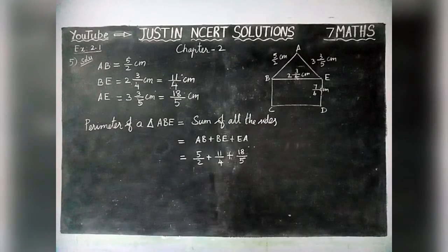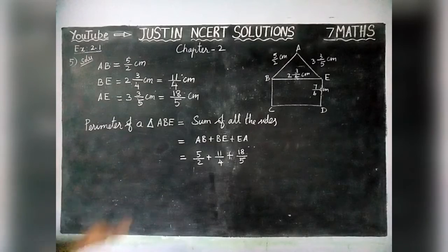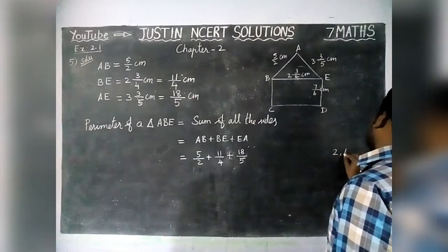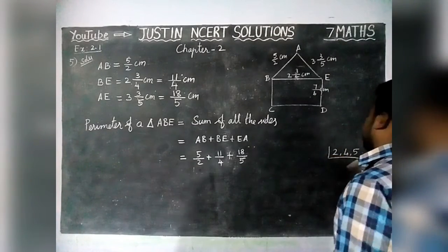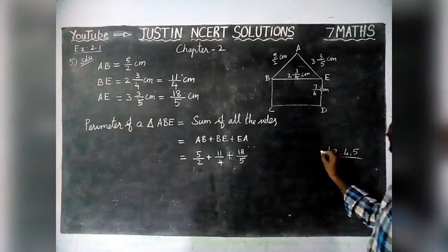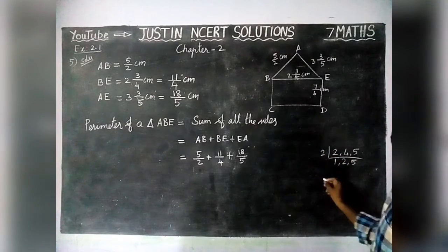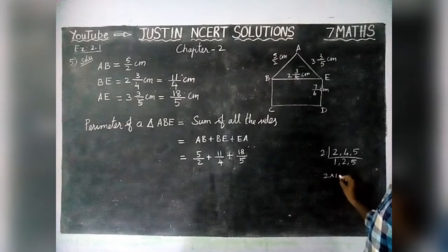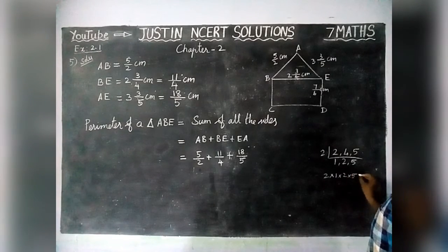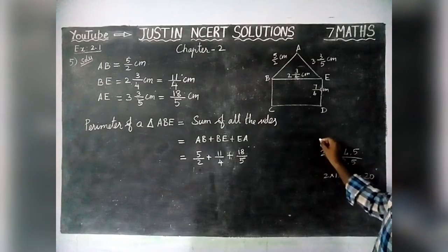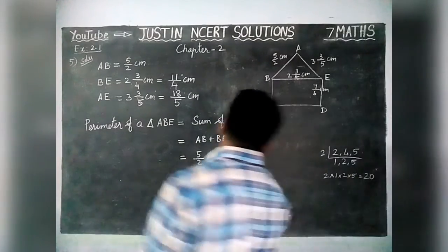Now we have to find like fractions, so we are going to convert these into like terms. The denominators are 2, 4, and 5. We have to find the LCM. Dividing by 2, we get 1, 2, 5. So LCM equals 2 × 1 × 2 × 5 = 20.